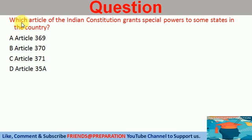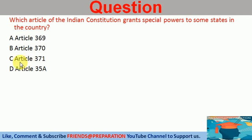Question. Which article of the Indian Constitution grants special powers to some states in the country? A. Article 369. B. Article 370. C. Article 371. D. Article 35A.